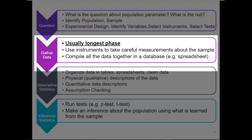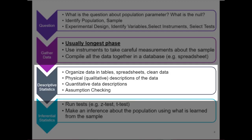The next step is the gathering data phase. This is usually the longest phase — it takes a long time to gather data and to be careful with it. You will use the instruments that you selected in the first phase to take careful measurements about a sample, then you will compile all your data together in a database. Usually we use a spreadsheet.